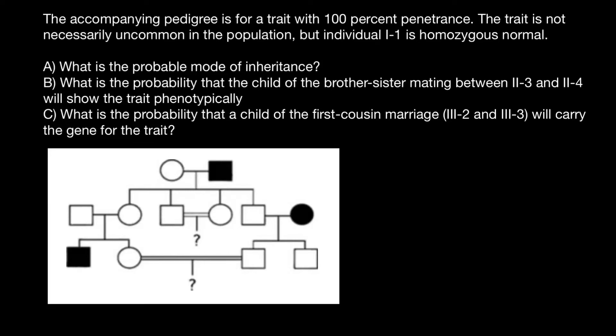Hello and welcome to Nikolai's Genetics Lessons. Today's problem is the accompanying pedigree for a trait with 100% penetrance. The trait is not necessary and common in the population, but individual 1-1 is homozygous normal. Here are the three questions. If you think this is a very simple problem, it is not so.